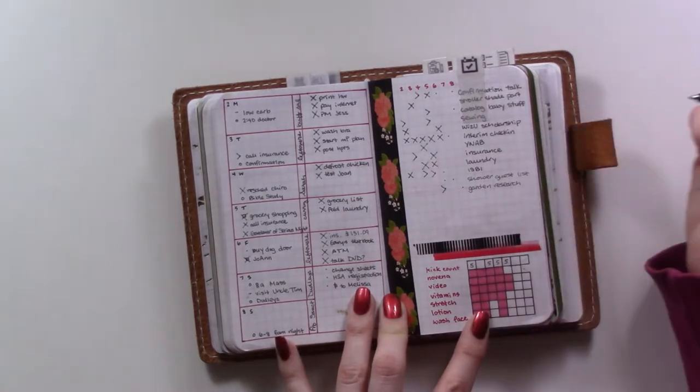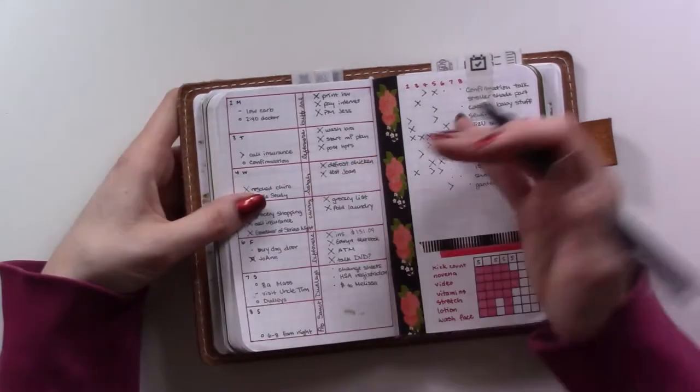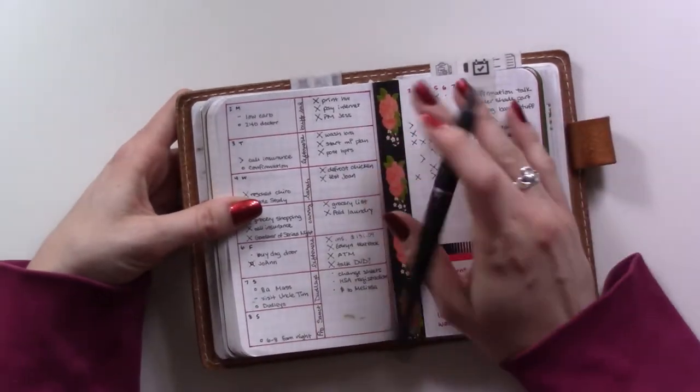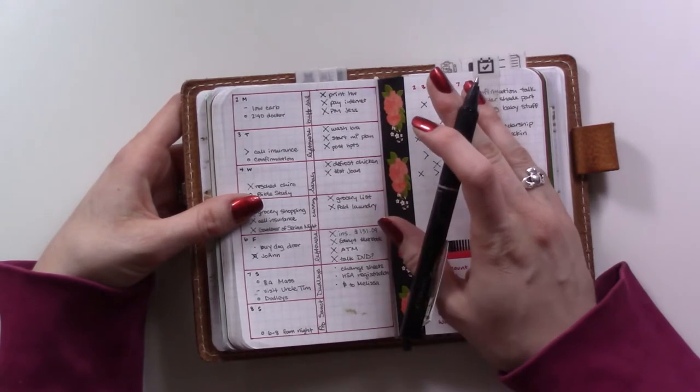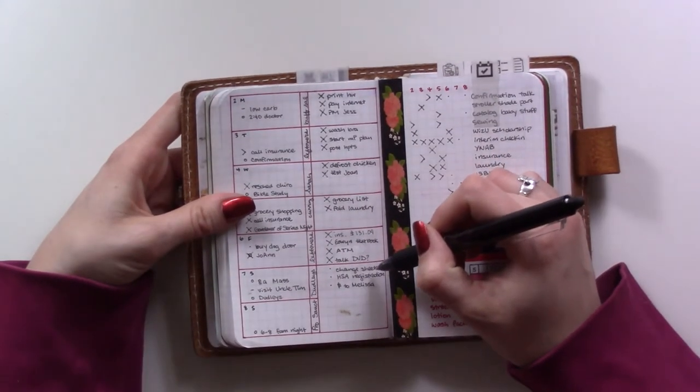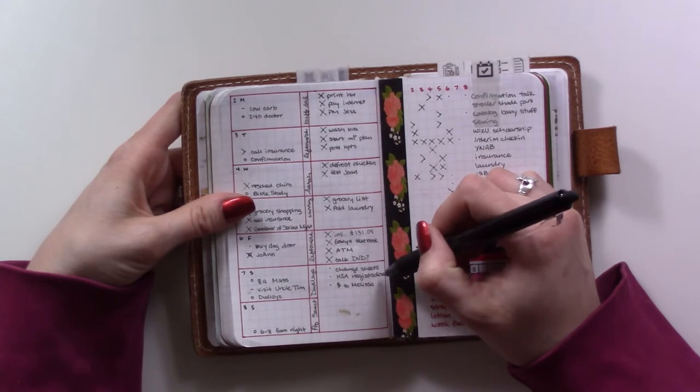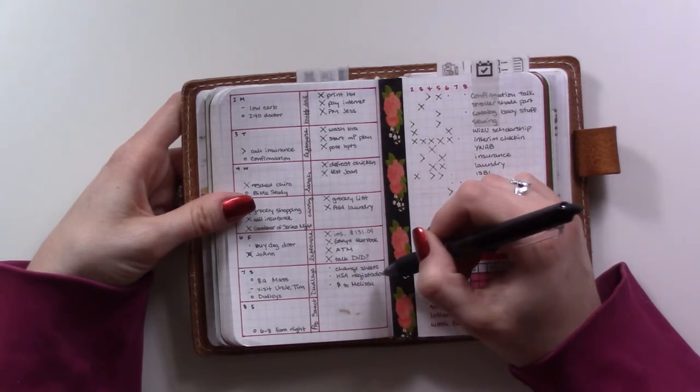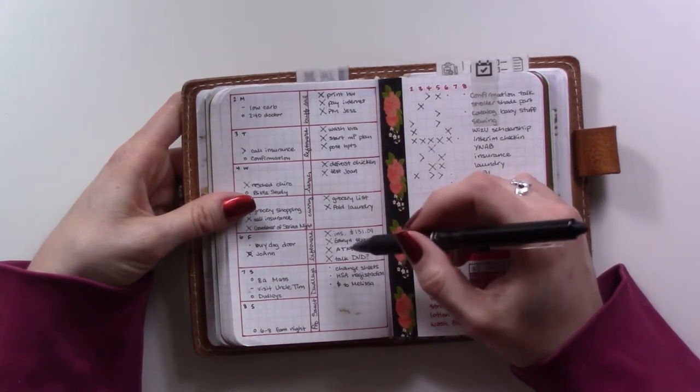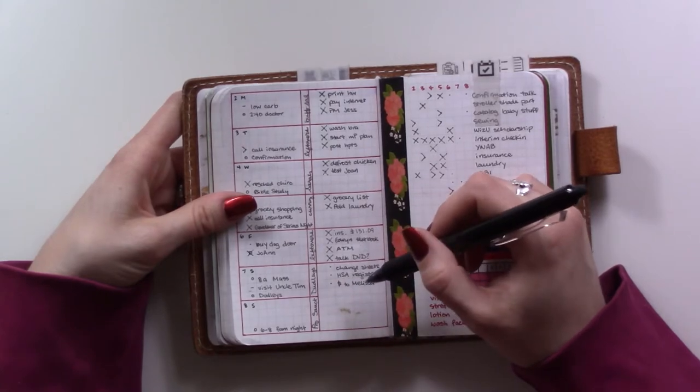Basically there's not a lot of to-dos because I'm going to be out and about most of the day. I have a couple things like we need to change the sheets this weekend, I need to register with a new bank for the HSA at work, then I have to send some money to my cousin.